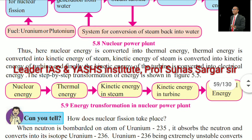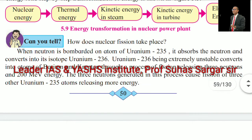Here the nuclear energy is converted into thermal energy. Thermal energy is converted into the kinetic energy of steam. Kinetic energy of steam is converted into the kinetic energy of the turbine. And finally, the kinetic energy of the turbine is converted into electrical energy. See the energy transformation in a nuclear power plant.